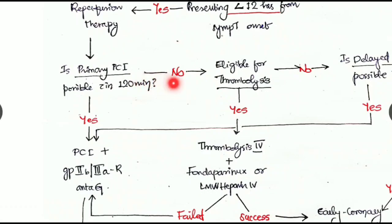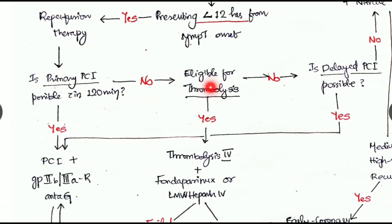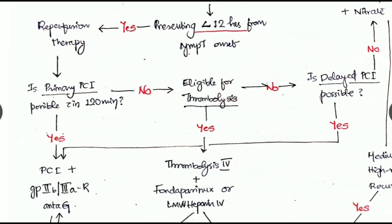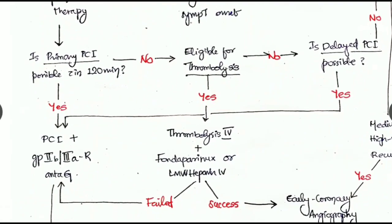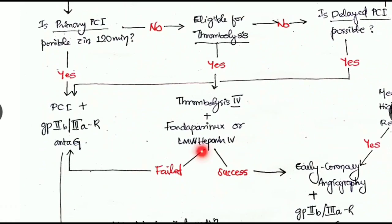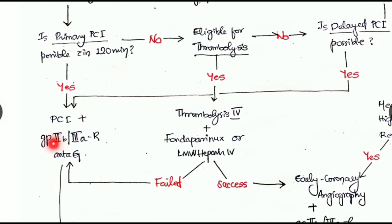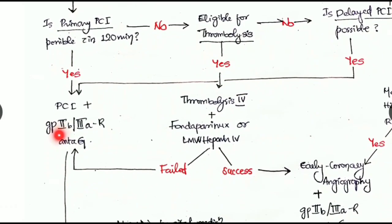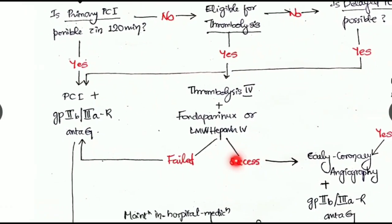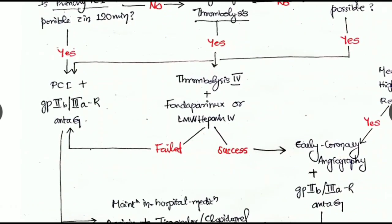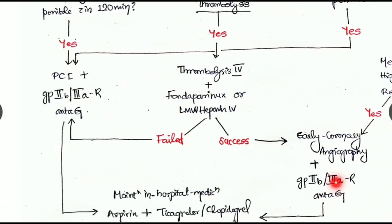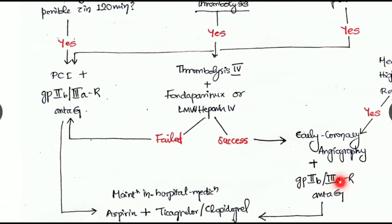If this primary PCI is not possible, then check whether the patient is eligible for thrombolysis. If yes, then go for thrombolysis combined with fondaparinux or low molecular weight heparin IV. If that is failed, we are forced to go for PCI combined with the GP2b3a receptor antagonist. If it is a success, then we have to go for early coronary angiography combined with GP2b3a receptor antagonist.